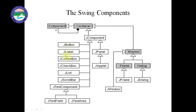So JButton, JLabel — instead of label we write JLabel in Java Swing. We also have JComboBox, JCheckBox, JList, JScrollBar, and JTextComponent. Inside JTextComponent we have JTextField and JTextArea. Frame and dialog are two parts of this window — inside the frame we have JFrame and JDialog.